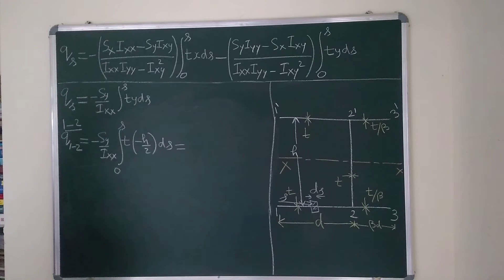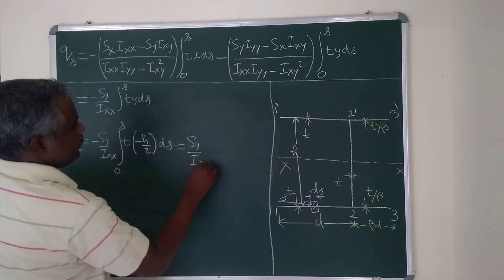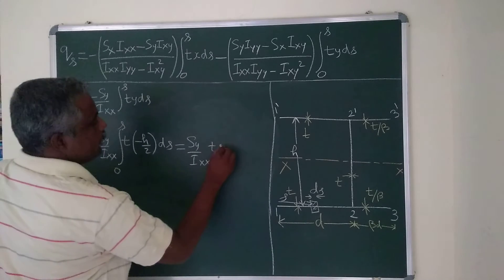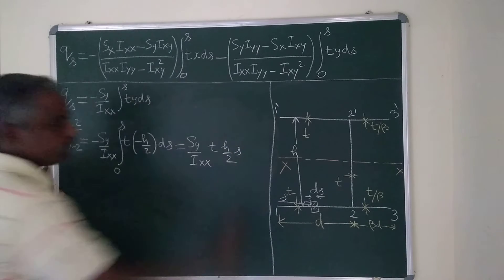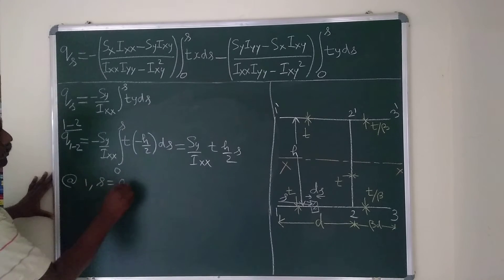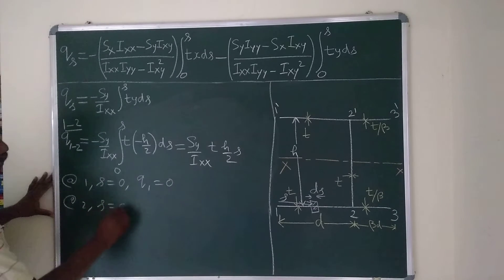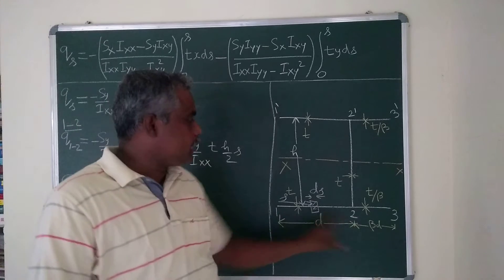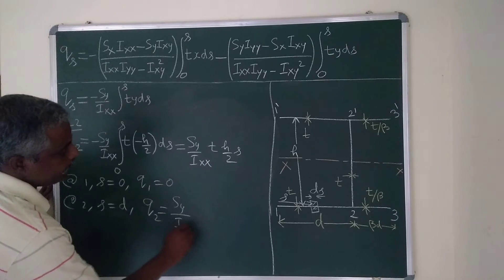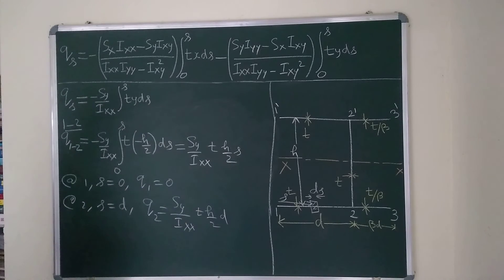For segment 1-2, Y = −H/2 (below XX axis), so minus × minus gives plus: Q(1-2) = (SY/IXX)·T·(H/2)·S. At S = 0, Q₁ = 0. At S = D, Q₂ = (SY/IXX)·T·H·D/2.